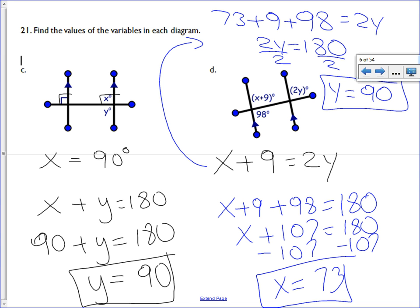Correction. Y is equal to 90. X is equal to 73. And we're done with 21C and D.